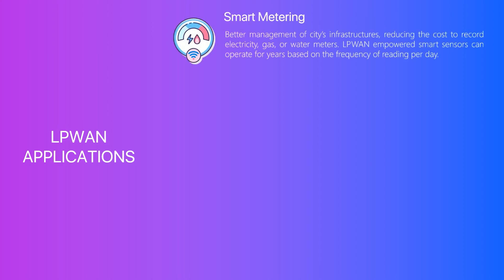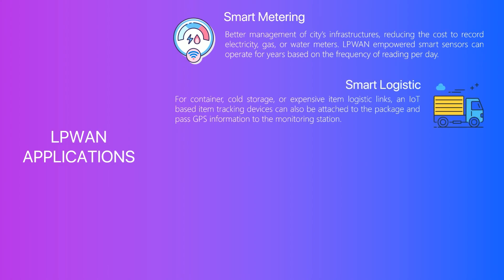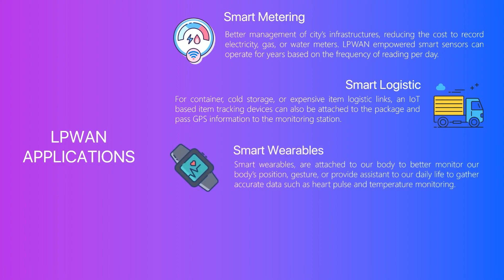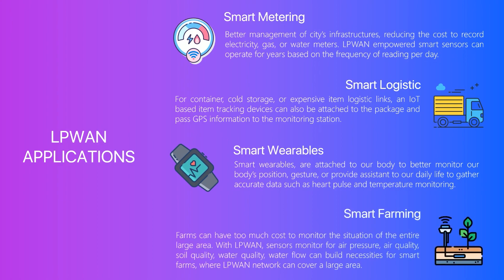Lastly, I'm going to share about some LPWAN applications. To build smart cities, we need smart metering. LPWAN-empowered smart sensors can be operated for years based on the frequency of readings per day. We can also have smart logistics where expensive items' logistic links can be tracked using IoT-based tracking devices. We can also have smart wearables such as smart watches to provide assistance to daily life and gather accurate data. Lastly, smart farming is an important application, where LPWAN enables low-cost monitoring of large rural areas for air pressure and air quality.